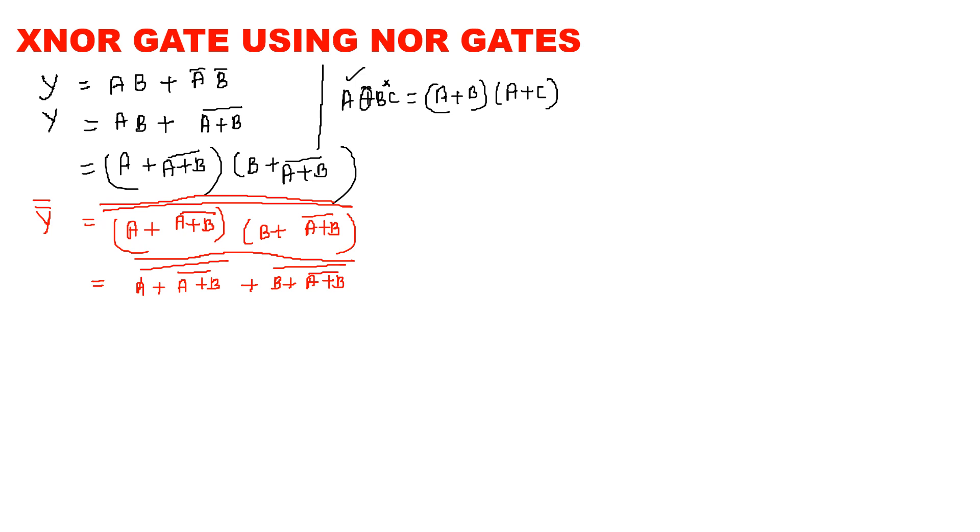Next, I have to implement this equation using which gate, that is NOR gate. How to implement this? So first, we have to implement A plus B bar. We need NOR gate.